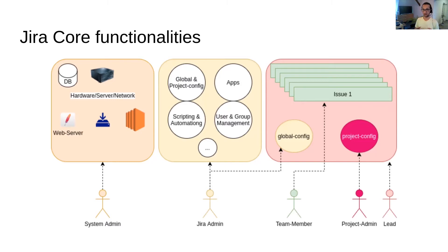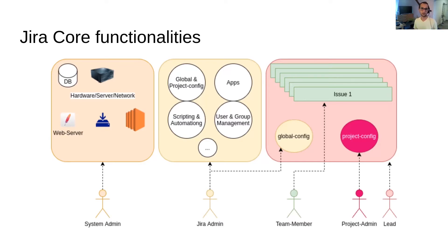In Jira Core you have several different roles. Starting from left to right, you have a system administrator — he's the person who installs the system and takes care of updates, upgrades, and security. You basically only need a system admin when you have an on-premise Jira platform. If you have a cloud Jira platform, you don't really need much system administration — a Jira admin would be sufficient.